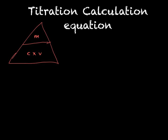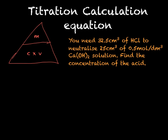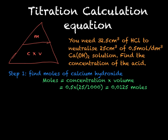A typical exam question might look like this: from a titration, you find that 32.5 cm³ of hydrochloric acid neutralises 25 cm³ of 0.5 mol/dm³ calcium hydroxide solution. Find the concentration of the acid. This is a three-step question. For step one, work out the moles of the known substance — calcium hydroxide. Moles = concentration × volume = 0.5 × (25 ÷ 1000) = 0.0125 moles of calcium hydroxide.